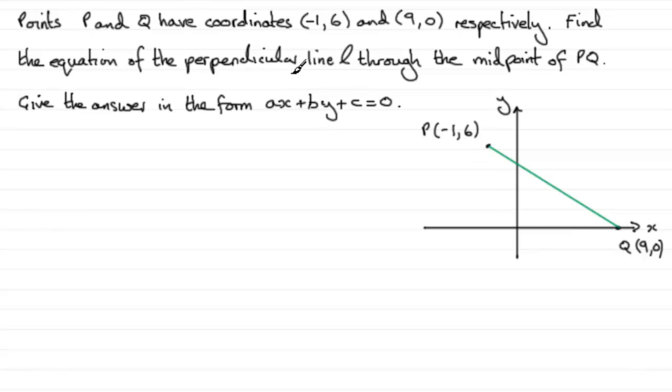And we've got a line that's perpendicular to PQ passing through the midpoint. Well, if we imagine then that this is our midpoint of PQ, let's just call it M.